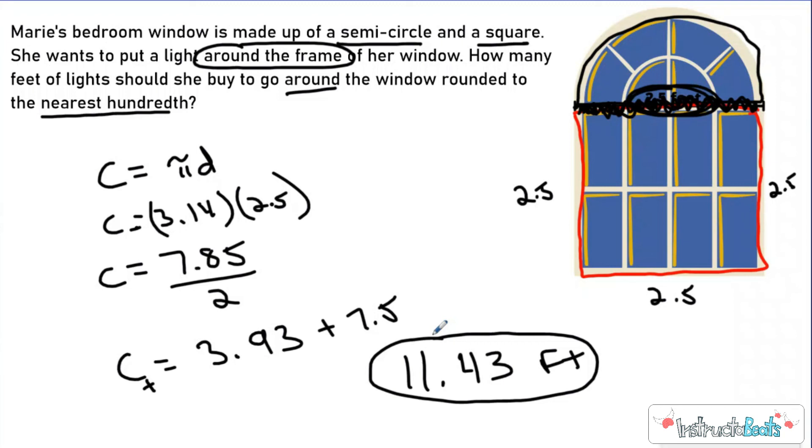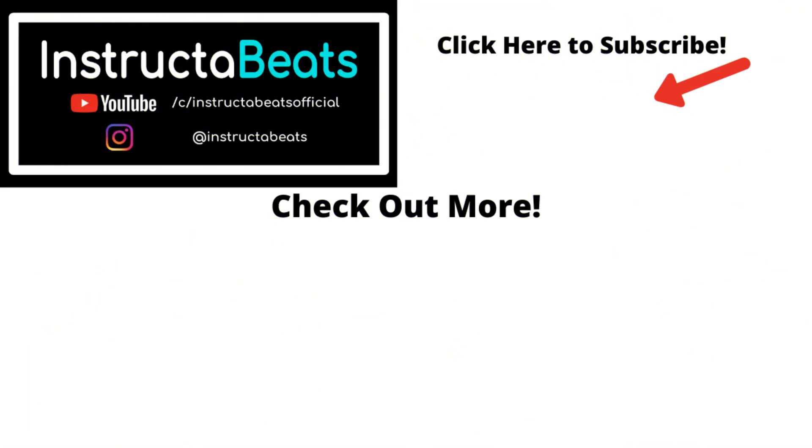So again, here's another type of real-world problem. They're going to give you a shape. It's going to be made up of a couple different types of shapes. You're going to have to be able to decompose it, and then use your area or your circumference knowledge to help you out. So hopefully you got that one right. If not, it's okay to fail as long as you learn from it. We would love for you to subscribe, comment, like the video, let us know where you're watching from. Check out all our merchandise at instructabeats.com. Again, thank you so much. Instructabeats, out.